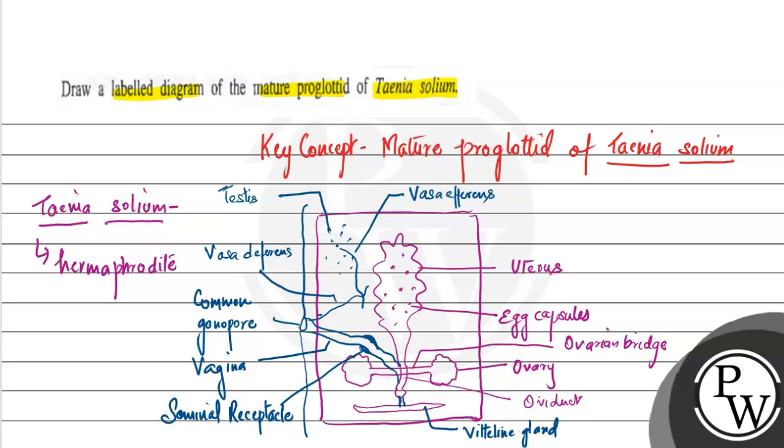And so there is the male as well as the female reproductive system, and this is the mature proglottid of Taenia solium. I hope you understood it well. All the best.